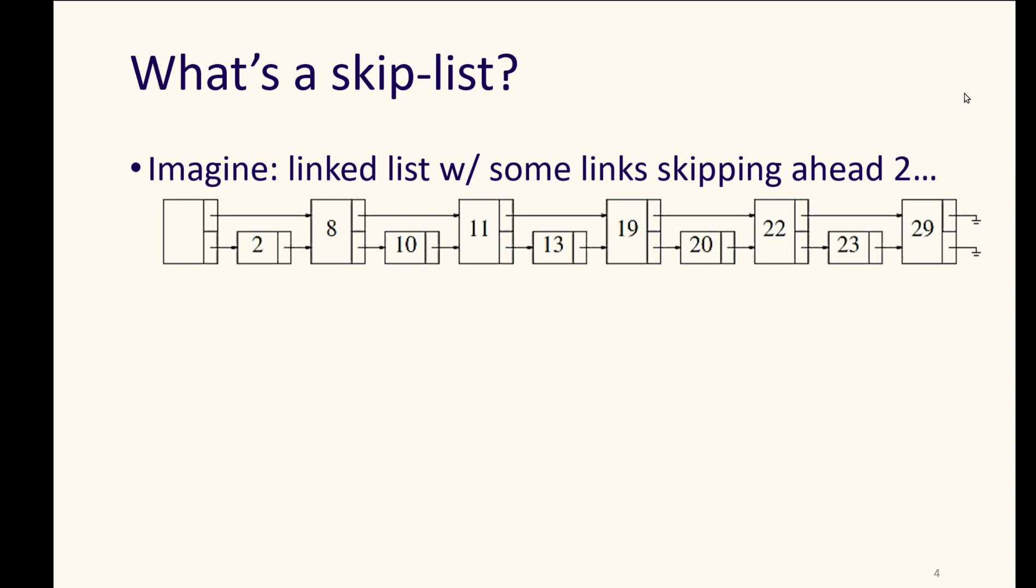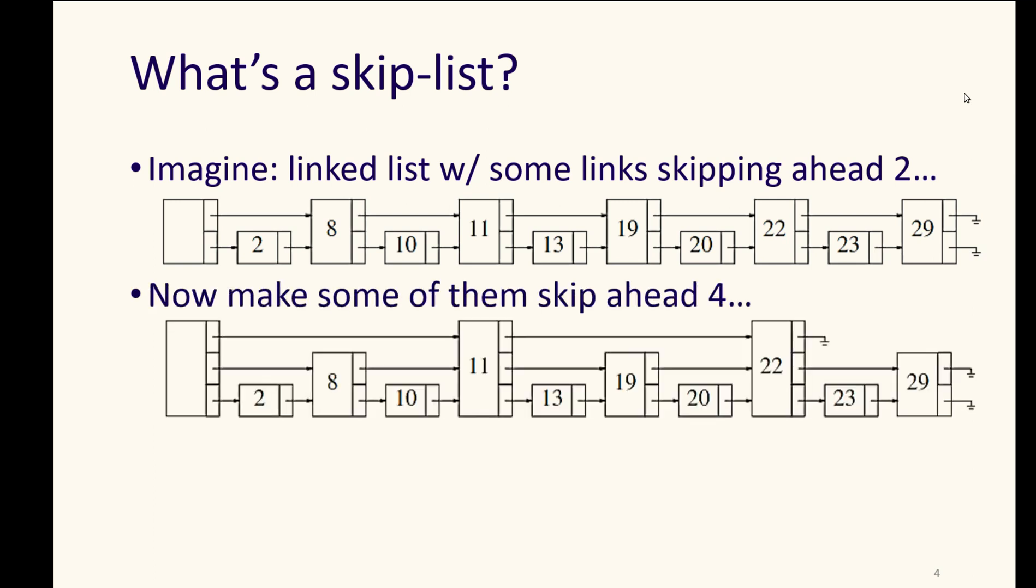So let's start off imagining that we could skip ahead two, meaning we just skip one item, and then we could look and see if we've gone too far and maybe go back or something like that. But then maybe we have a new layer to it where just like chapters and sections of a book, we could now have a hierarchy to it where one skip skips ahead by four and another skip skips ahead by two.